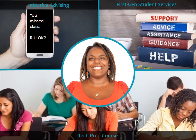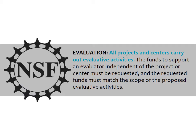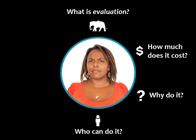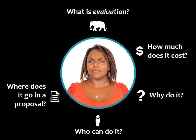Jen and her team feel like they have a pretty good plan that meets a real need at their college. She is reading over the ATE program solicitation before she starts writing her proposal, and she comes to a section on evaluation, which states that all projects carry out evaluative activities. She's never had an NSF grant and she's not entirely sure what they mean by evaluative activities. She has a lot of questions: What do they mean by evaluation? This project doesn't have a big budget — how much is it going to cost? Why do we have to do it? Who does the evaluation? Where does it go in the grant proposal? And what will happen — how does the evaluation affect my project?